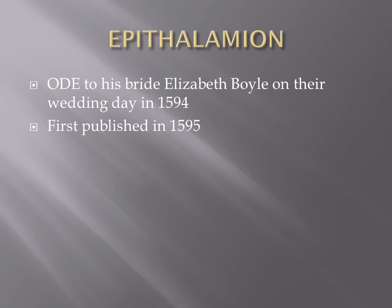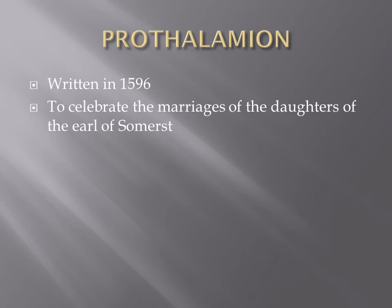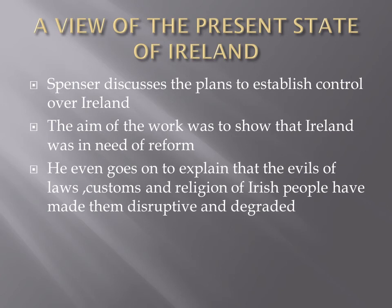Prothalamion was written in 1596 to celebrate the marriages of the daughters of the Earl of Somerset. A View of the Present State of Ireland is a prose work by Spenser in which he discusses plans to establish control over Ireland. The aim of the work was to show that Ireland was in need of reform. He explains that the evils of the laws, customs, and religion of the Irish people have made them disruptive and degraded.